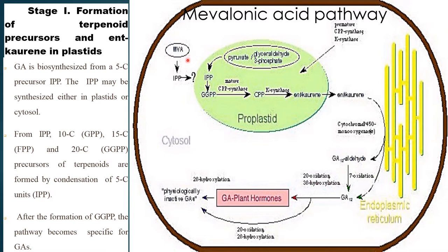Gibberellic acid is biosynthesized from a C5-carbon precursor, IPP, which is isopentenyl pyrophosphate. This isopentenyl pyrophosphate may be synthesized either in the plastid or the cytosol. From isopentenyl pyrophosphate, 10-carbon GPP, or 15-carbon FPP, or 20-carbon GGPP (geranylgeranyl pyrophosphate) will be synthesized, which is a precursor for terpenoids formed by the condensation of isopentenyl pyrophosphate.